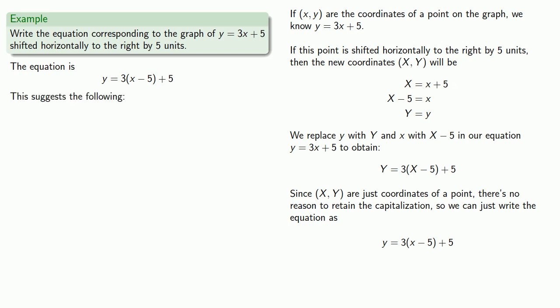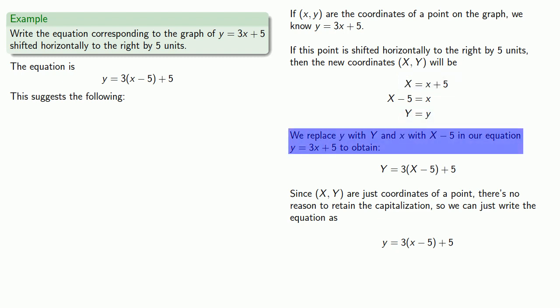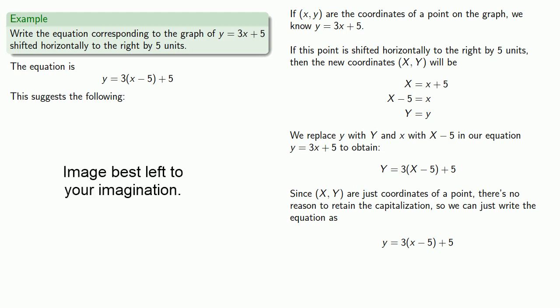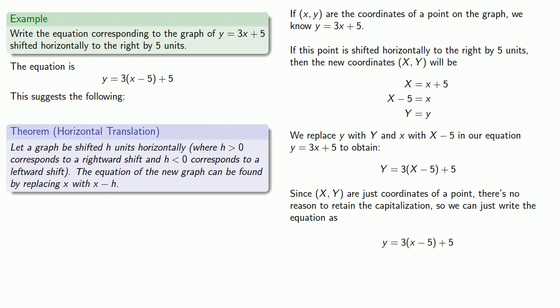This suggests the following. One of the worst ways of learning mathematics is to simply memorize theorems without understanding the underlying concepts. The underlying concept here is that a horizontal translation corresponds to an alteration of our x and y coordinates, followed by a replacement in the original equation. If you understand this idea, you don't need the theorem. Contrariwise, if you don't understand this idea, the theorem is a power tool you're using without safety equipment — sort of like using a chainsaw while wearing a swimsuit. But here's the theorem: let a graph be shifted h units horizontally, where h greater than 0 is a rightward shift and h less than 0 is a leftward shift. The equation of the new graph is found by replacing x with x minus h.